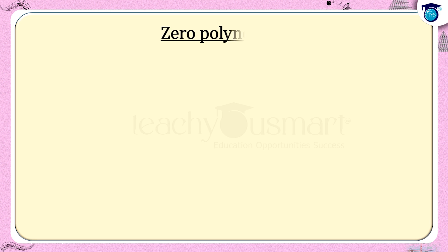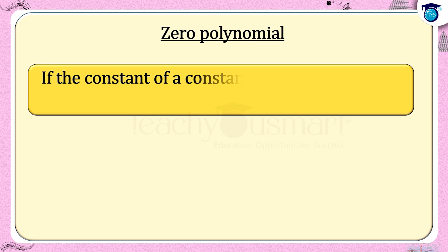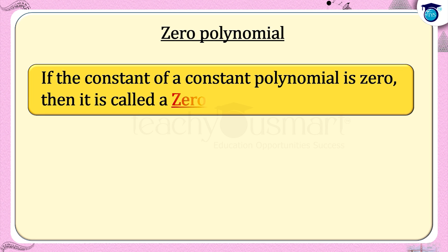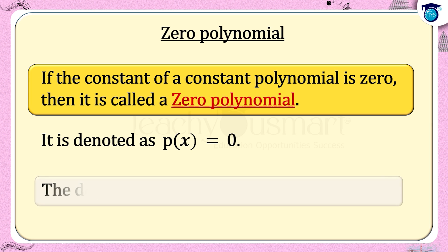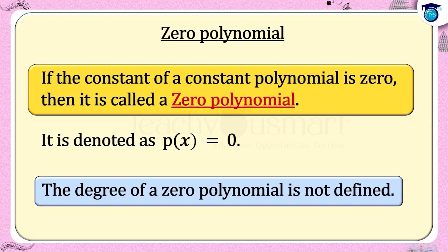Let us see what is a zero polynomial. If the constant of a constant polynomial is zero, then it is called a zero polynomial, denoted as p(x) = 0. The degree of a zero polynomial is not defined.